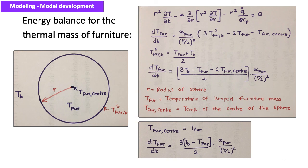The heat equation in spherical coordinates is given by this equation, and the finite difference method is used to discretize it. After discretization, the average temperature of furniture and inside air is used as the surface temperature of the furniture, and the center temperature of the furniture sphere is used as the furniture temperature.